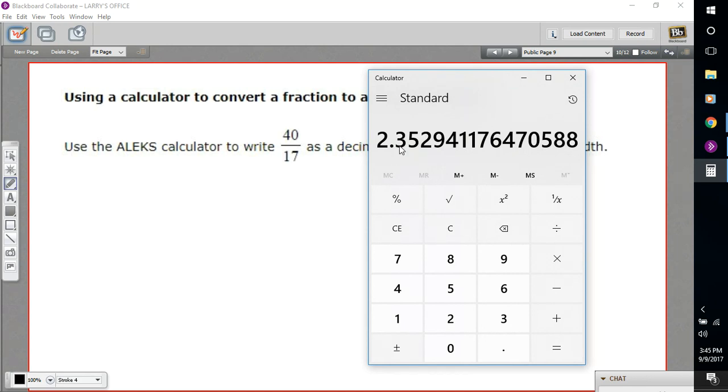To do that, I go to the hundredths place. Here's tens, tenths, here's hundredths. And then I go one more to the right and check this number. If it's five or greater, we would round this one up to a six. If it's not, we leave this one as it is.